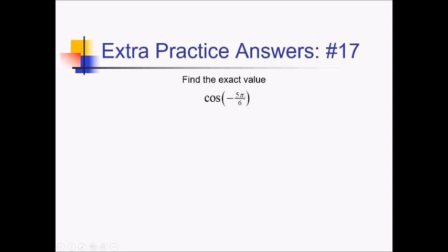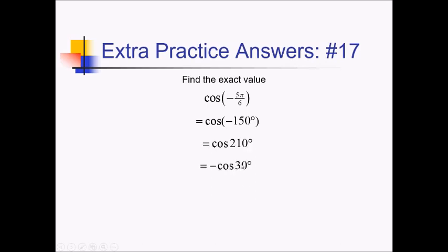To figure out cosine of negative 5 pi over 6, let's first convert to degrees. 180 divided by 6 is 30; times negative 5 is negative 150 degrees. Adding 360 to get a positive angle: that's really cosine of 210. Now I know where I am on the unit circle — I'll convert to a reference angle. We are 30 degrees from the 180 line, the x-axis. Cosine in quadrant 3 is going to be negative because we're to the left of the y-axis. So this is negative cosine of 30, which is negative radical 3 over 2.